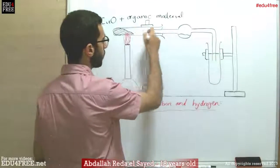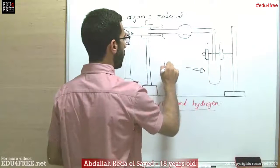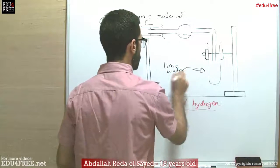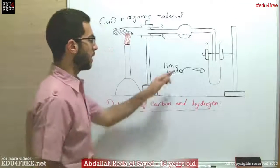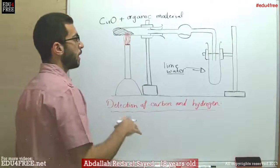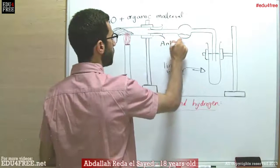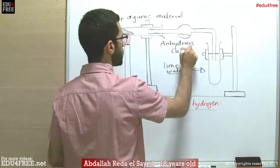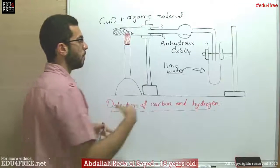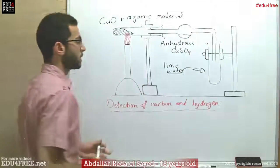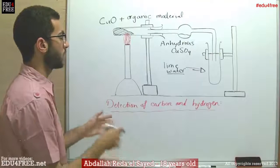A certain gas will be released and will pass through this bent tube until it reaches the lime water. A change will appear in the lime water which will indicate what element is found in the organic matter. Also, here in the swelling of the bent tube we have anhydrous copper sulfate — anhydrous means it doesn't contain any water at this moment. Its color is white, and its color will also change, indicating the presence of a certain element.